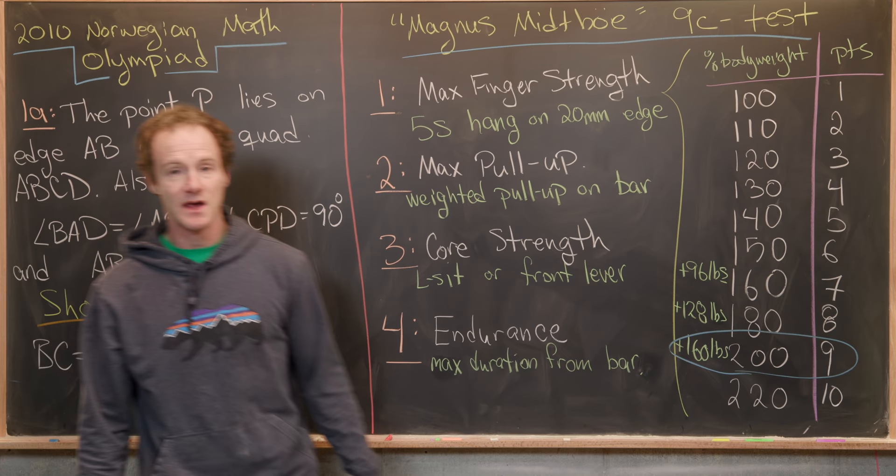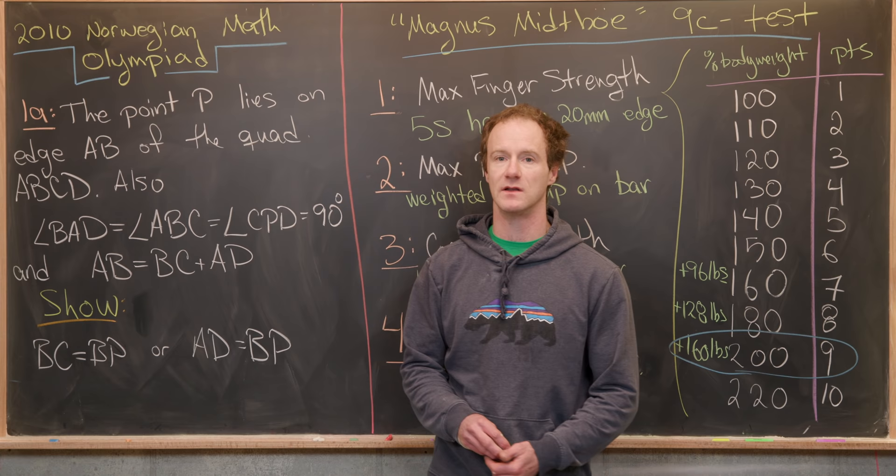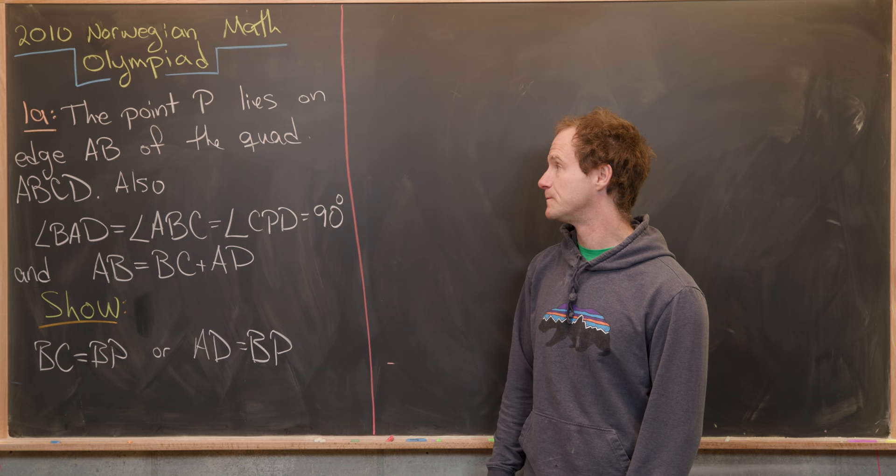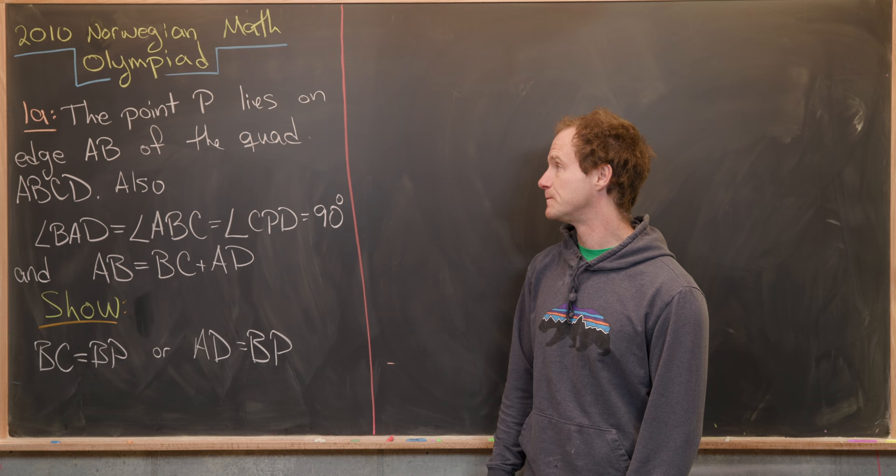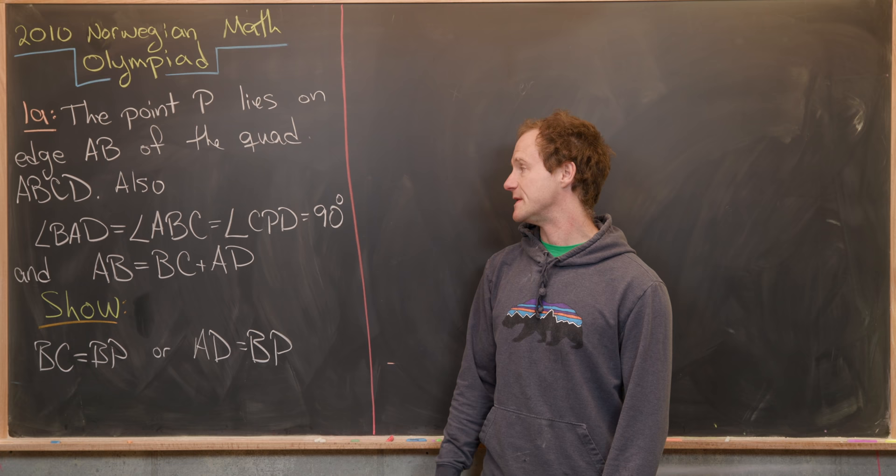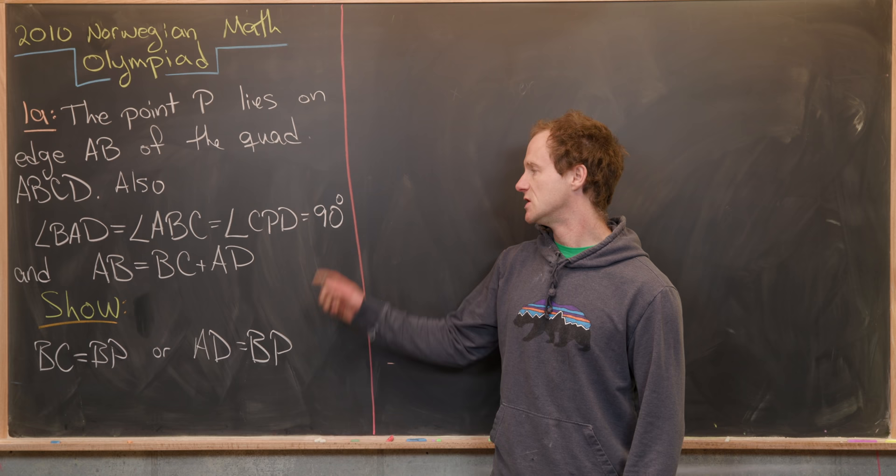So now before we talk about the maximum pull-up test, maybe let's do question 1A from this 2010 Norwegian Math Olympiad. So hopefully you guys are enjoying this climbing content. Now we're ready to look at a problem from the Norwegian Math Olympiad. So like I said before, this is from the 2010 edition. And it is question 1A. We'll do question 1B later. So this says the point P lies on the edge AB of the quadrilateral ABCD. We're also given some extra data. We know the angle measure of BAD is equal to the measure of angle ABC, which is equal to the measure of angle CPD, which is 90 degrees. So we've got these three right angles.